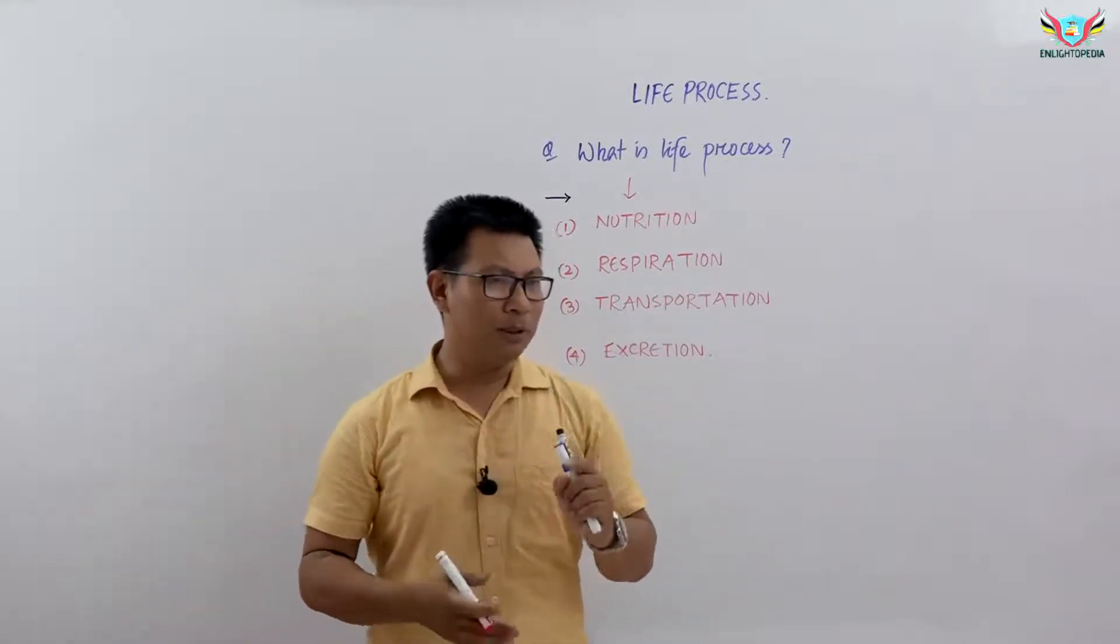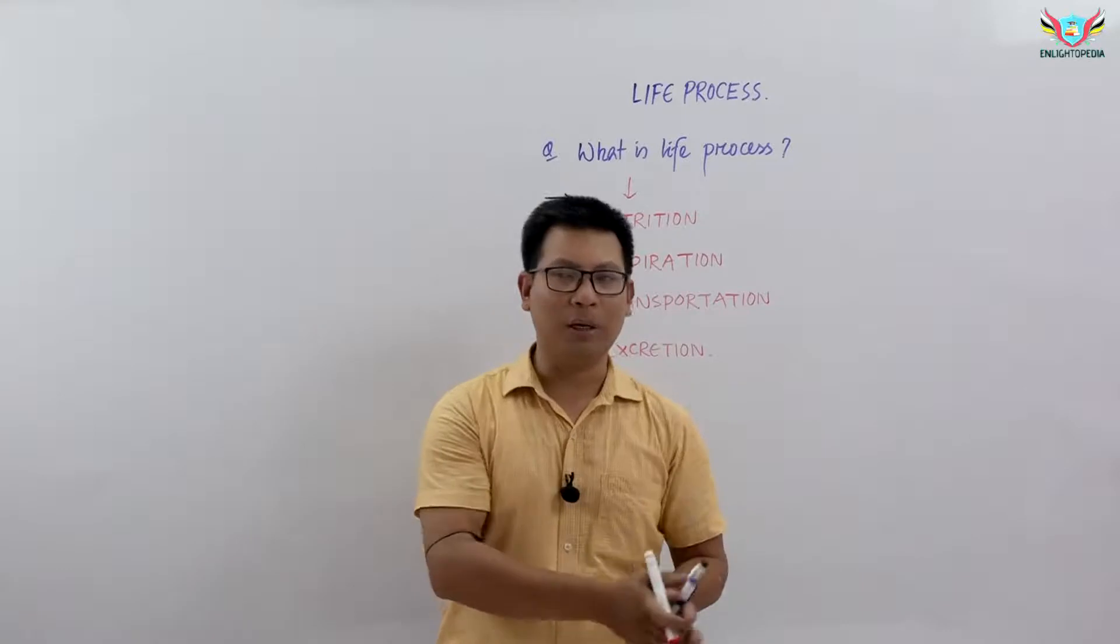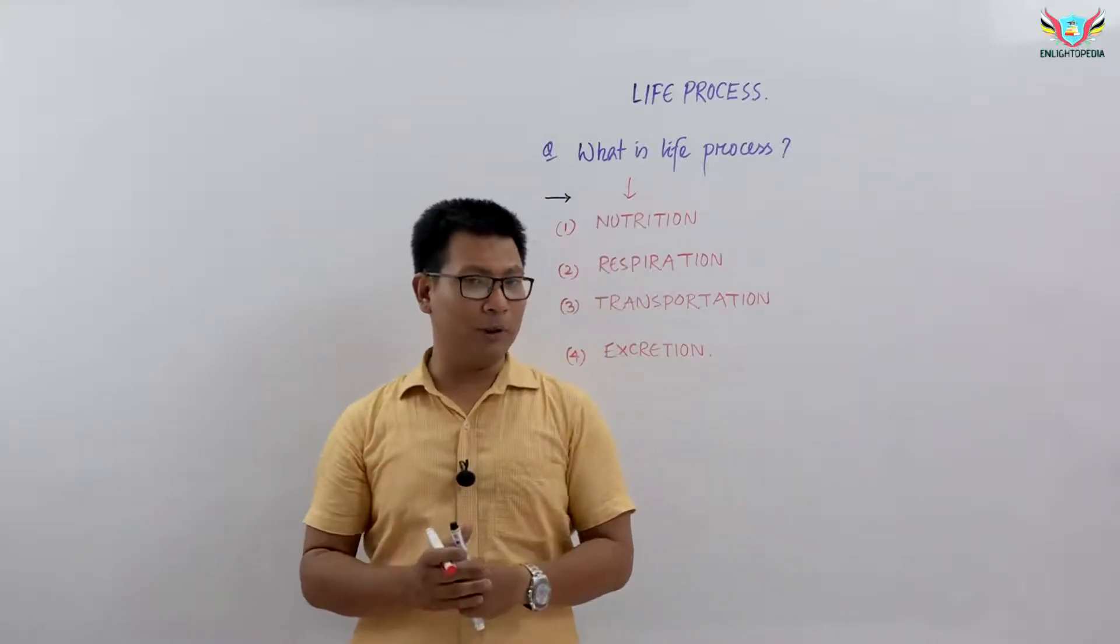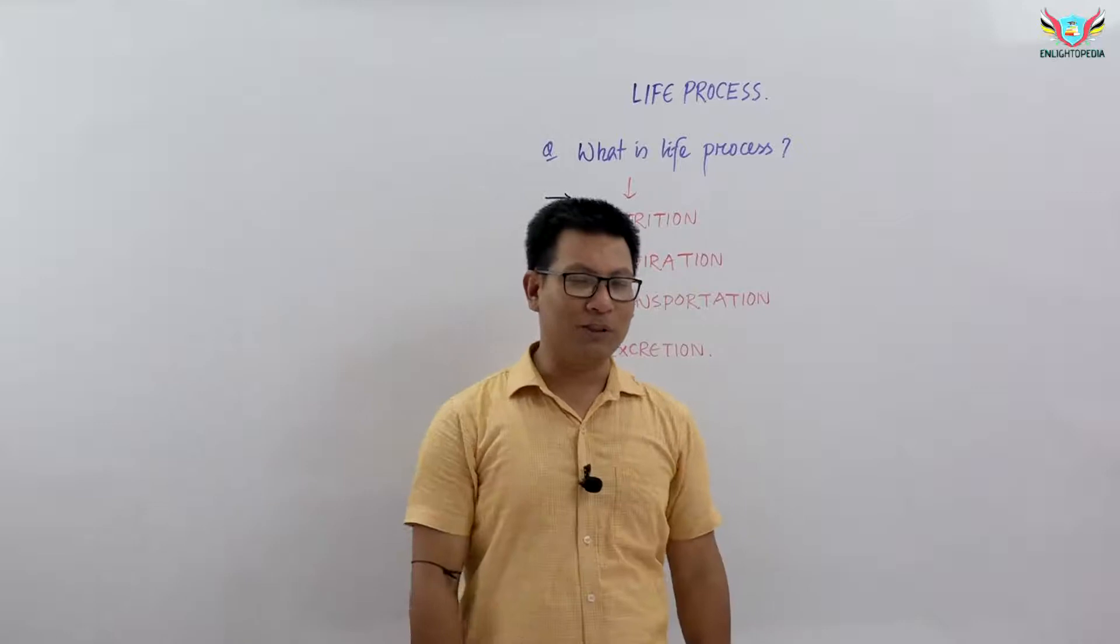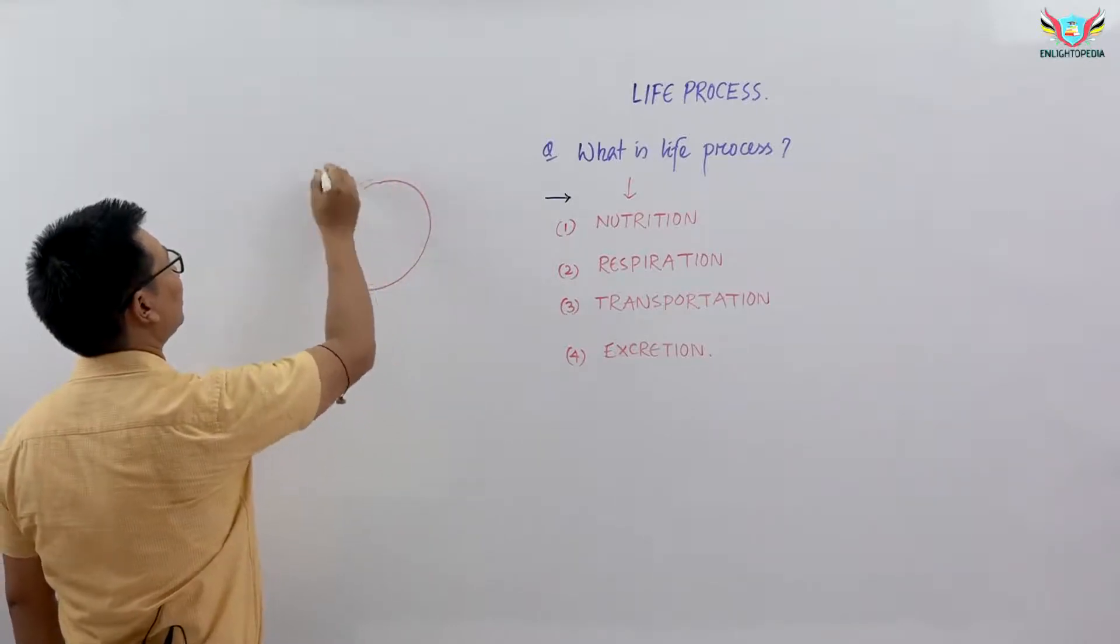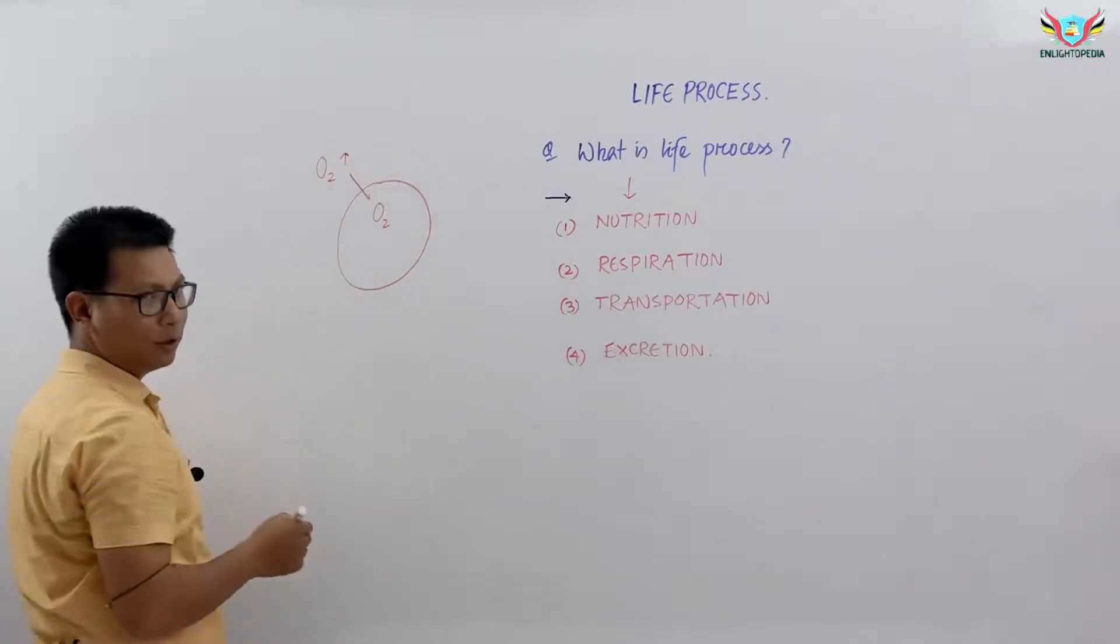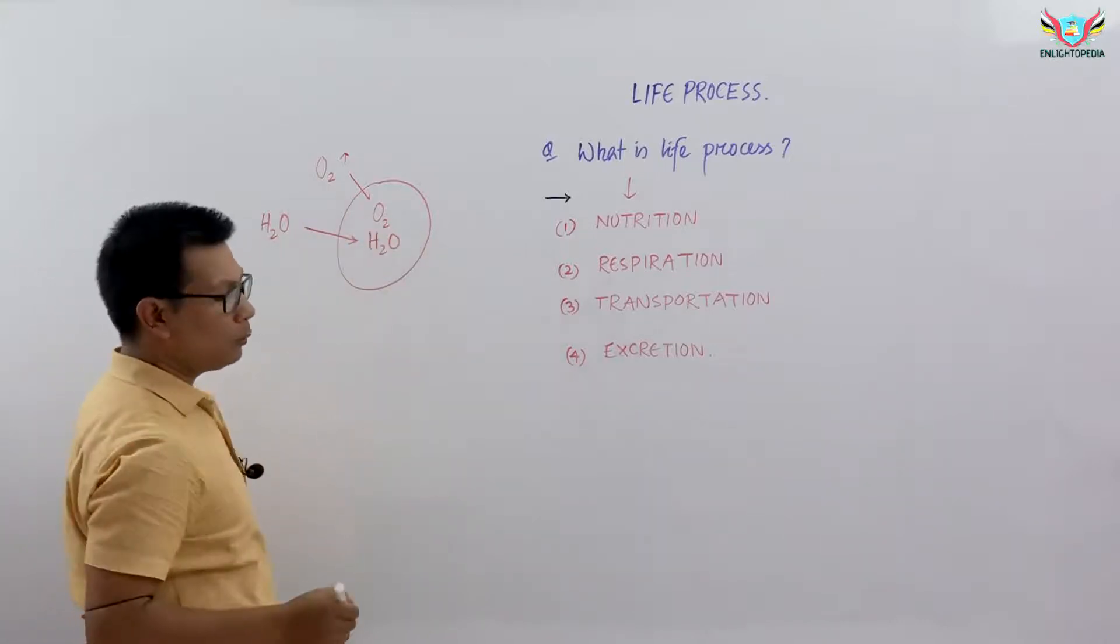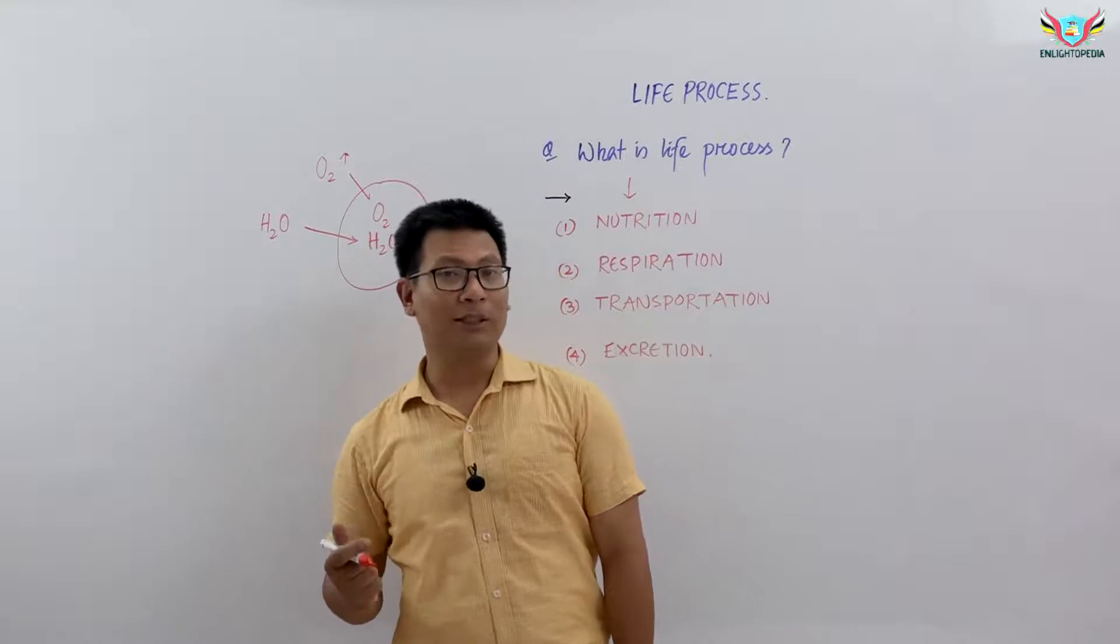Transportation: Living organisms can be unicellular (one cell body) or multicellular (many cells). In unicellular organisms like bacteria, substances such as oxygen are exchanged with the environment through diffusion. Water molecules move through osmosis. These organisms can exchange substances directly with the environment.